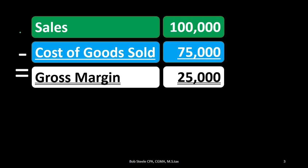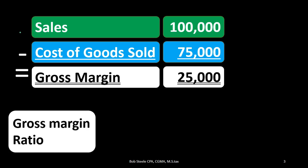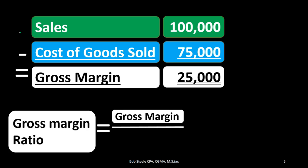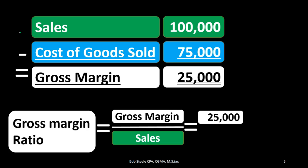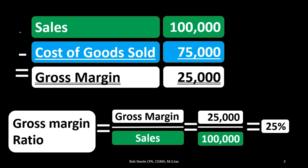That gives us the gross margin number — in this case 25,000 — which is typically shown at the top of a multi-step income statement. To get the gross margin ratio as a percentage, we take that gross margin and divide it by the sales number. Here, 25,000 divided by 100,000 equals 0.25, or 25%. That means we're keeping 25 cents on every dollar of sales after cost of goods sold.